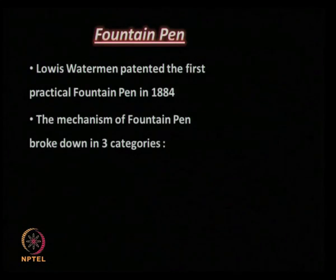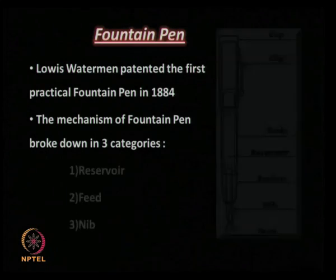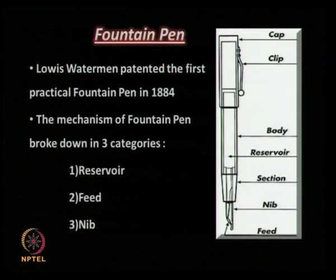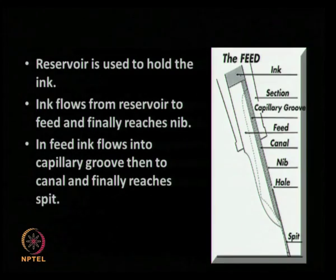The mechanism of the fountain pen may be broken down into three categories: first the reservoir, second the feed, and third the nib. It is mainly used to hold the ink. Ink flows from the reservoir to the feed and finally reaches the nib. In the feed, ink flows into a capillary groove, then to the canal, and finally reaches the slit.